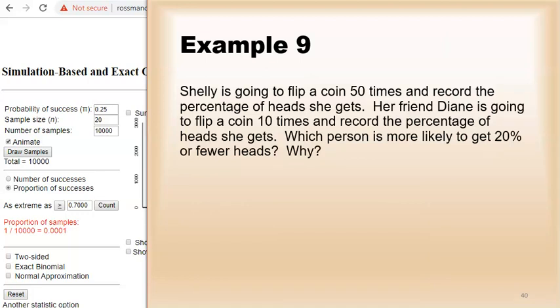All right, finally. Shelly is going to flip a coin 50 times and record the percentage of heads she gets. Her friend Diane is going to flip a coin 10 times and record the percentage of heads she gets. Who's more likely to get 20 percent or fewer heads? Well, you can work out the simulations, but what it really comes down to is that the more times you do something, the more likely you're going to get the actual answer.